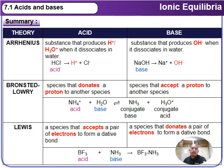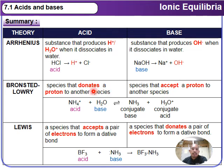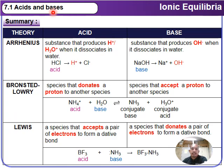In conclusion, the three theories classify acids and bases as follows. Arrhenius: acid is a substance that produces H⁺ or H₃O⁺ when it dissociates in water; base produces OH⁻. Brønsted-Lowry: acid is a species that donates a proton to another species; base is a species that accepts a proton. Lewis: acid is a species that accepts a pair of electrons to form a dative covalent bond; base donates a pair of electrons. Please remember the three differences between these theories to classify acid and base compounds.